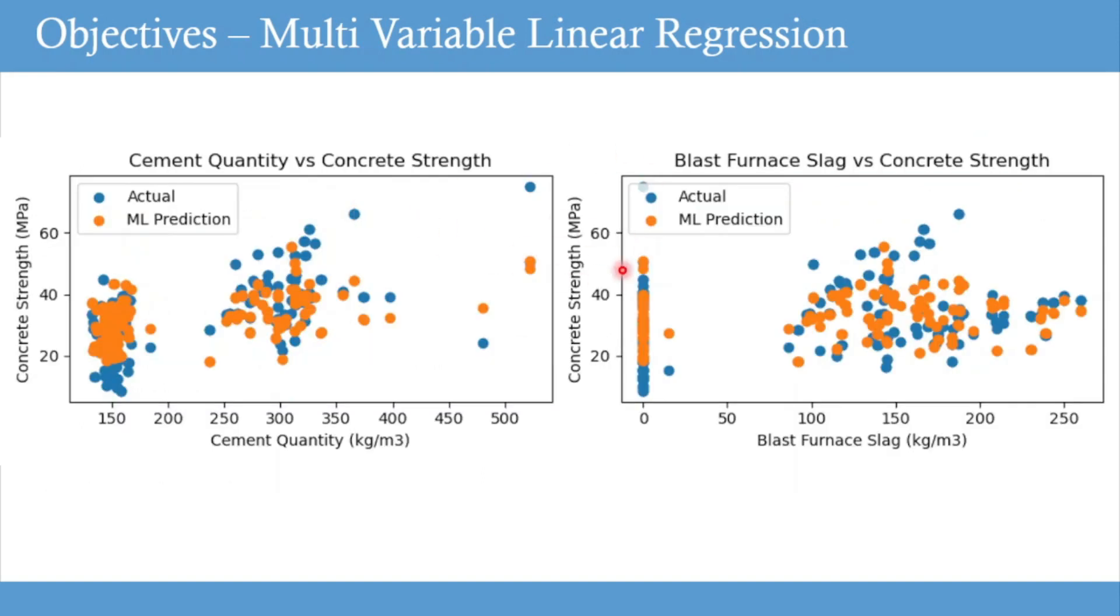This plot shows the actual test values and machine learning predictions. The blue dots represent the actual values, whereas the orange dots represent the machine learning predictions. In this project, we will explore several ways to draw beautiful plots like this to interpret the data. Data analysis and interpretation are very important steps in machine learning, and we will explore that in detail.